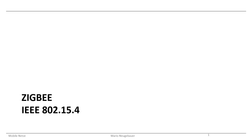Hello and welcome to this video in the series for mobile networks. I would like to explain the media access layer for the ZigBee standard in this video. The ZigBee standard is actually specified for the first two layers in the IEEE standard 802.15.4, specifically the physical layer and the MAC layer — the first two layers of the OSI layer model.